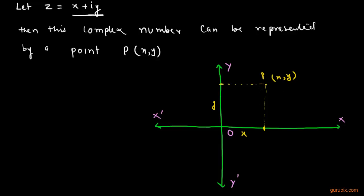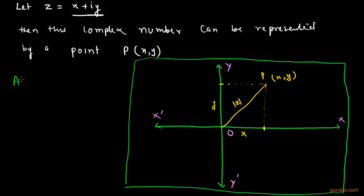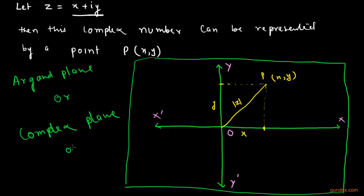This point P with coordinates x and y represents the complex number x plus iota y. The straight line OP represents the modulus of the complex number z. The coordinate of point P represents the real and imaginary parts: x represents the real part and y represents the imaginary part. This plane is called the Argand plane, or we can say it is a complex plane or a Gaussian plane.